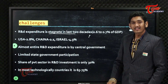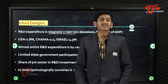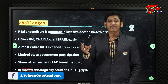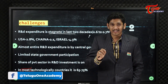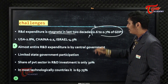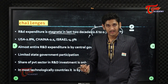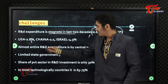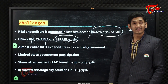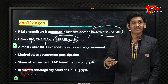The R&D expenditure will be stagnant — even 1% of GDP is considered good. We thought that at least 2% of GDP should go toward R&D, but India is only at 0.6 to 0.7% of GDP. By comparison, the US is at 2.8%, China is at 2.1%, and Israel is at 4.3%.